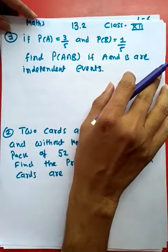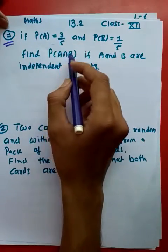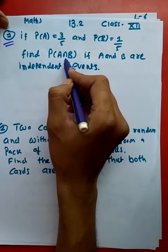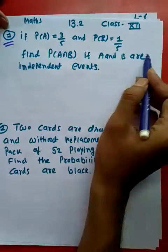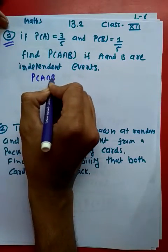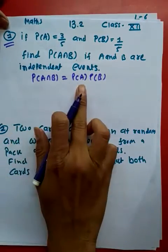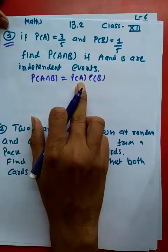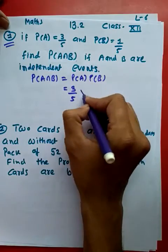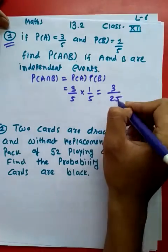Now the first example: if P(A) is 3/5 and P(B) is 1/5, find P(A∩B) if A and B are independent events. As we discussed, if they are independent events, then the equation I should use is P(A∩B) equals P(A) into P(B). So P(A) is 3/5 and P(B) is 1/5, and my answer comes to 3/25.